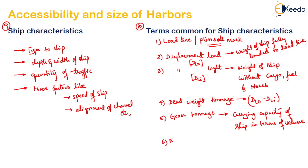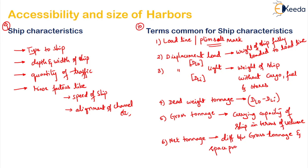The sixth term is net tonnage. It is the difference between the gross tonnage and the space provided for the crew, machinery, engine room, or fuel. So: net tonnage = gross tonnage minus space provided for crew, fuel, machinery, engine room, etc.